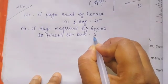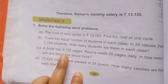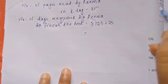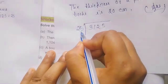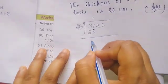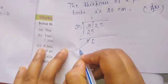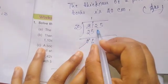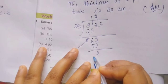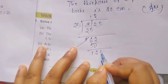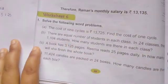3,125 divided by 25. 25 times 1 is 25. 1 minus 5 we cannot subtract, so borrow: 11 minus 5 equals 6. Then 2 minus 2 equals 0. 6 is less than 25, so we bring down 2, making 62. 25 times 2 is 50. 62 minus 50: 2 minus 0 equals 2, 6 minus 5 equals 1. Bring down 5: 25 times 5 is 125.